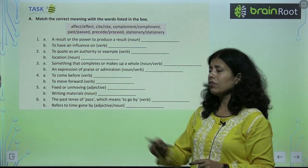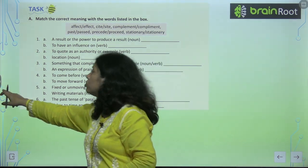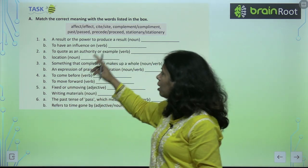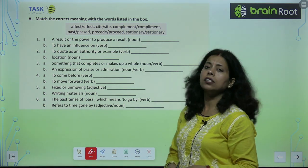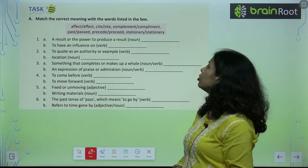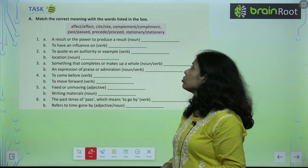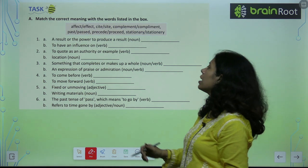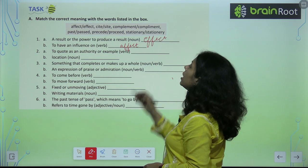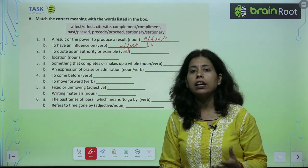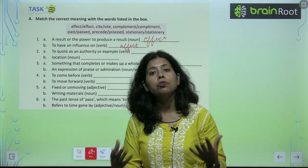Let's look at an exercise to clarify some commonly confused words. 'A result or the power to produce a result' — that is 'effect.' 'To have influence on' — that is 'affect.' Match the correct meaning with the word listed in the box.